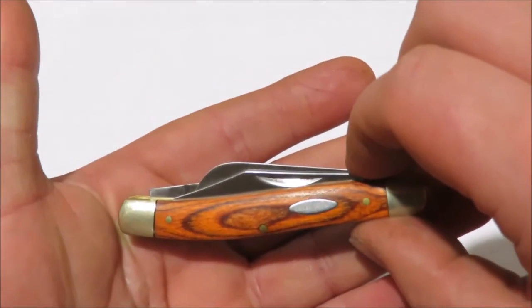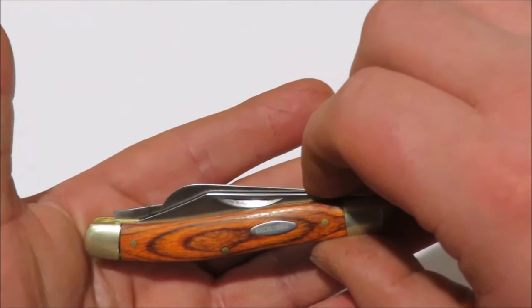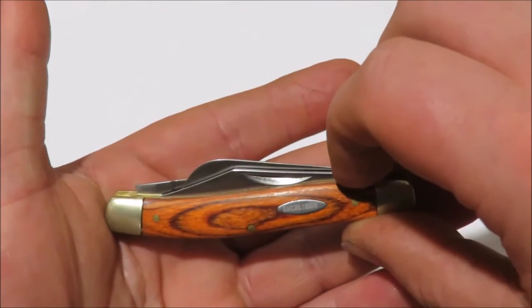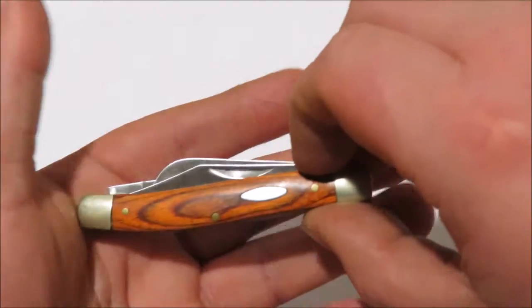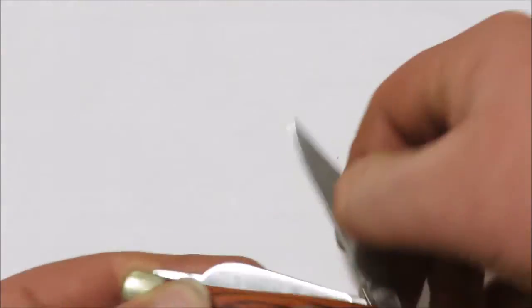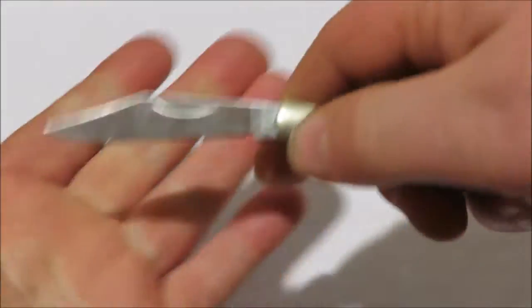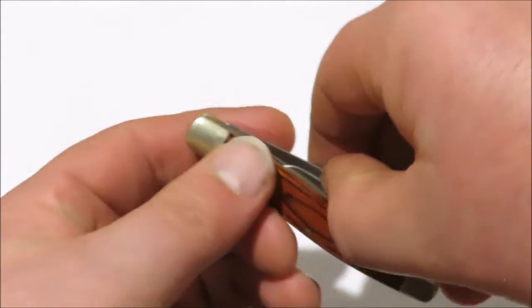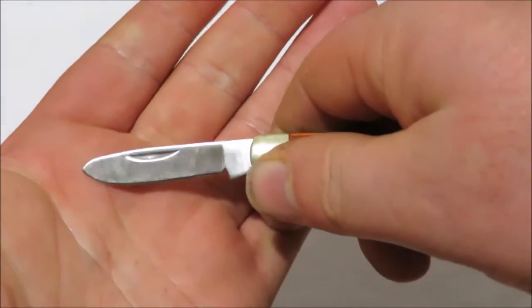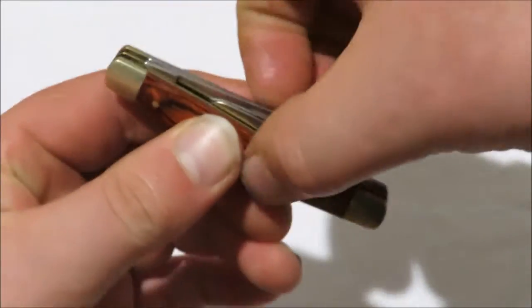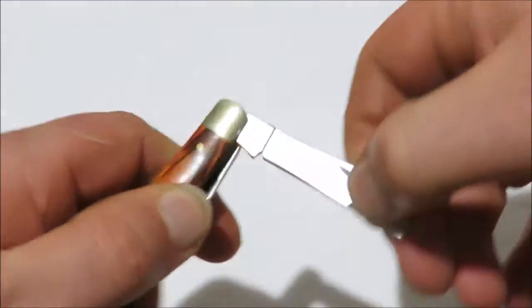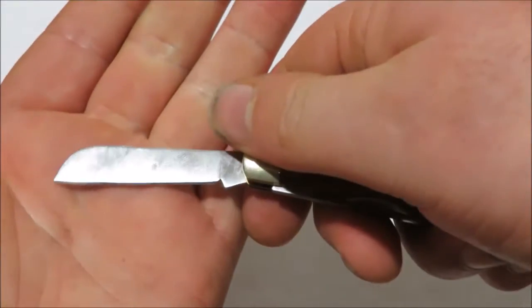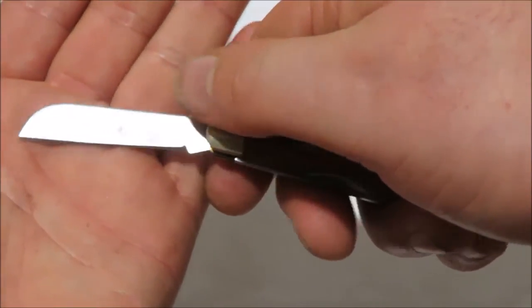This is the X-Galiber 3-bladed Dockman. So you've got your clip point, your sheep's foot, and then you've also got a worm cliff blade as well.